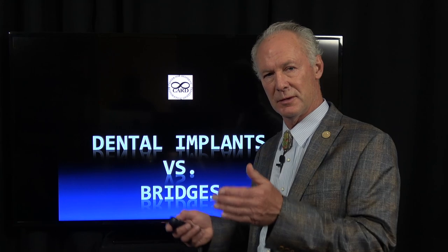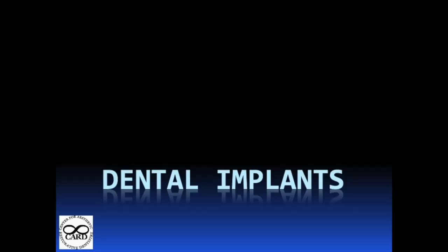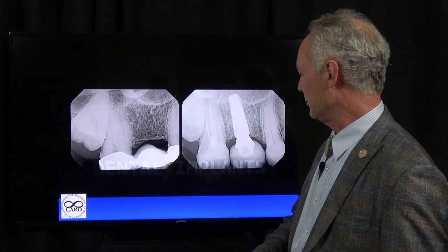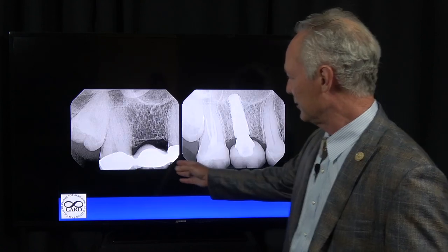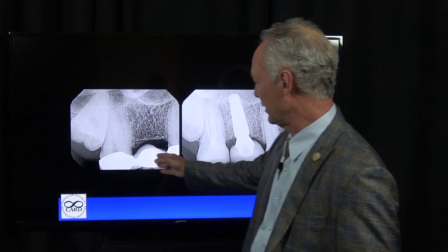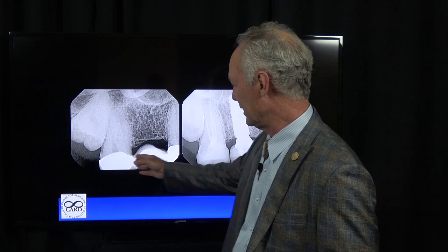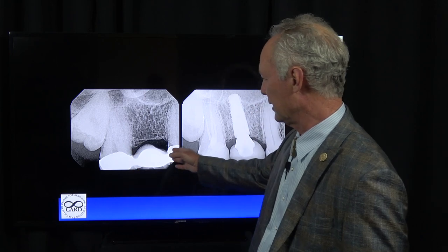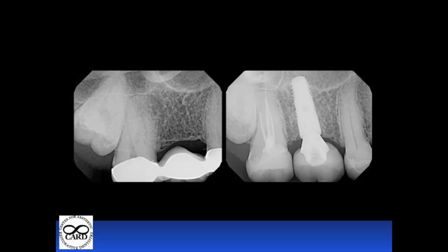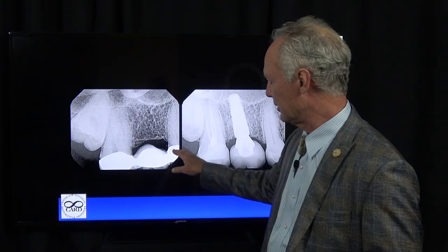So let's talk about when you use either one — the fixed bridge or the implant. Let's first talk about implants. This patient presented with a bridge that was decayed, a fixed bridge. A fixed bridge connects to the adjacent teeth.